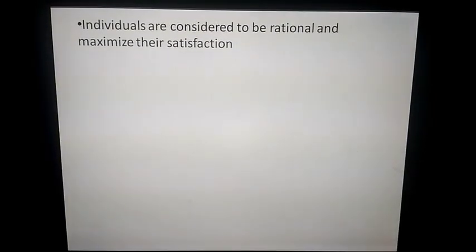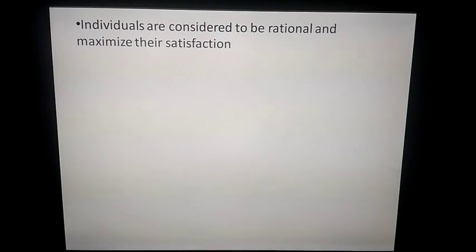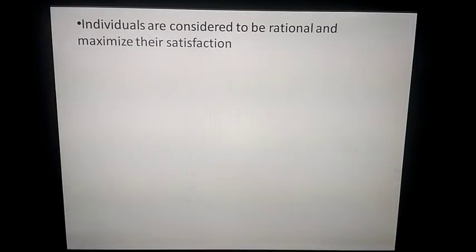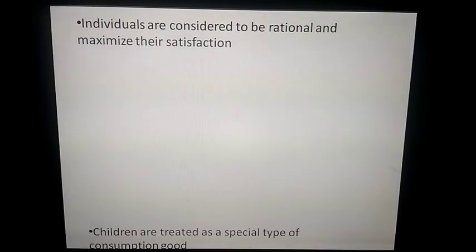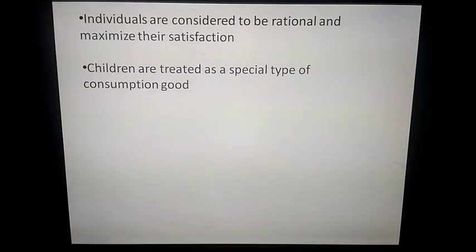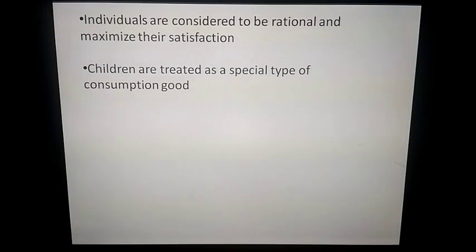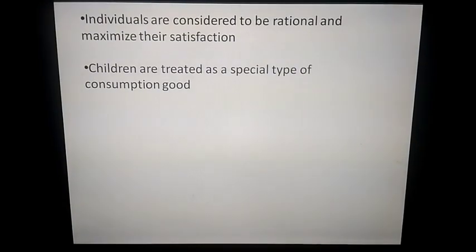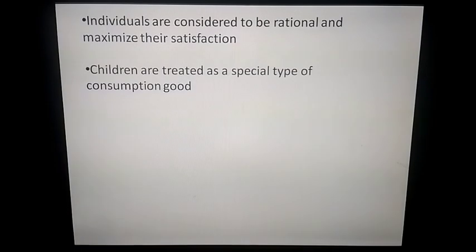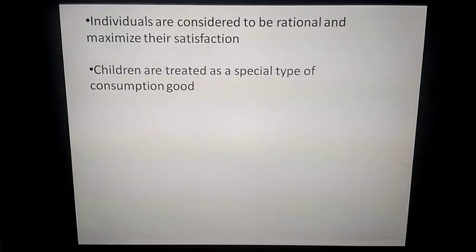This theory talks about the conventional behavior of consumers — consumers are considered to be rational and would want to maximize the satisfaction they gain from the consumption of goods, subject to their income and the prices of goods. This theory is applied to fertility analysis: children are considered as a special type of consumption good, so fertility becomes a rational economic decision in response to the number of children a family would have relative to other goods. The income and substitution effects are assumed to apply.